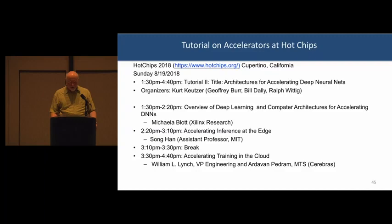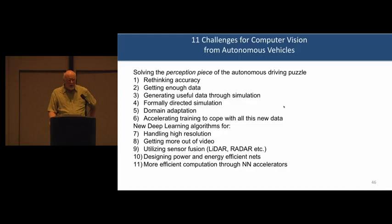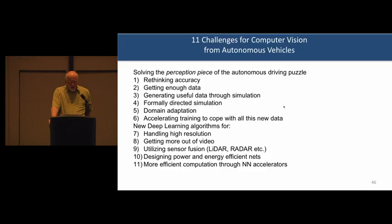Let me also plug a tutorial I put together for Hot Chips, where we'll spend a whole afternoon in August with tutorial speakers talking about accelerator design. So that's the 11 challenges for computer vision for autonomous vehicles. I thought fairly seriously about this and talked to colleagues. I think deep learning can do this, I think it can be done, and most importantly I think it's going to be fun.